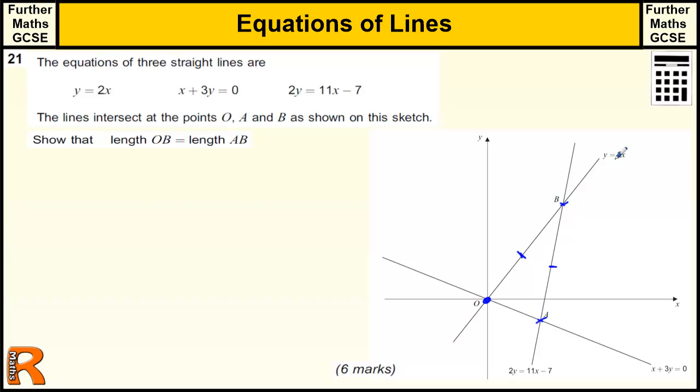The coordinates of B are where y equals 2x and 2y equals 11x minus 7 intersect. So to find where they intersect, we could just solve these equations simultaneously. So if I double the top equation to get 2y equals 4x, then I know that the 4x is equal to 11x minus 7 because the 2y's are equal.